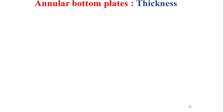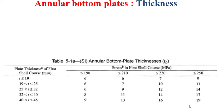Now I'll explain how to determine the thickness of the annular bottom plates. The thickness is determined based on Table 5-1 of the API 650 standards. Based on this table, we can directly determine the thickness of the annular bottom plate.